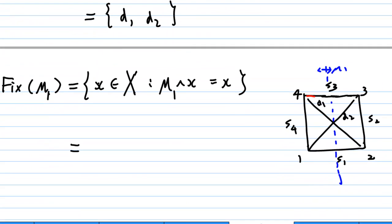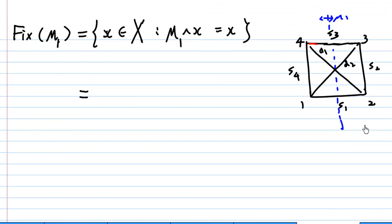Now let's look at another fixed set, Fix(μ₁), where μ₁ is a reflection in a vertical line bisecting the square. What element will be fixed after this reflection? Well, we know that S3 will be fixed after this reflection. We can see from the diagram, S3 will be fixed after reflection, and similarly S1 will be fixed after this reflection. The rest of the sides and diagonals and vertices will not be fixed.